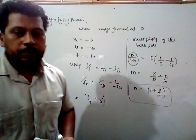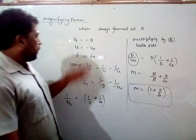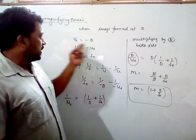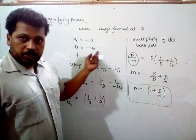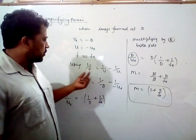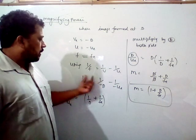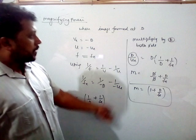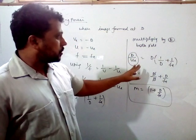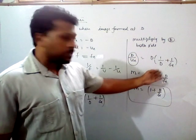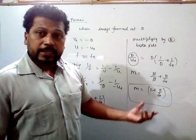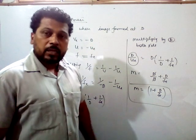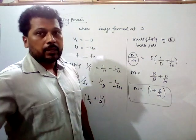The magnifying power of the simple microscope when the image forms at the least distance of distinct vision D is M equals 1 plus D upon F_E. Multiplying both sides by D: D upon U_E equals the magnifying power, so M equals 1 plus D by F_E. This is how we derive the magnifying power of the simple microscope.